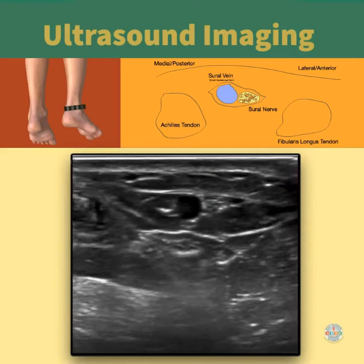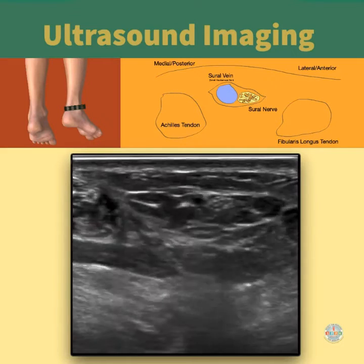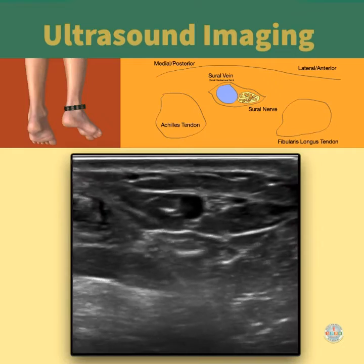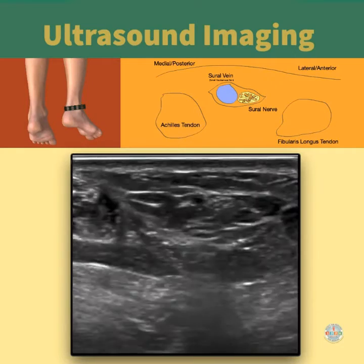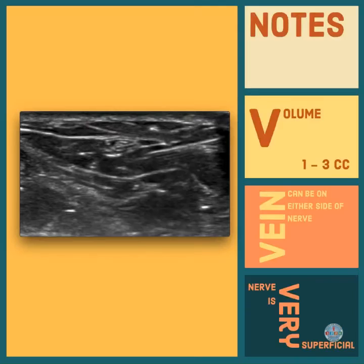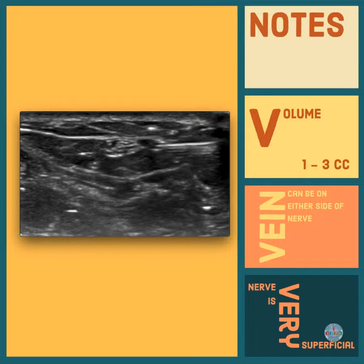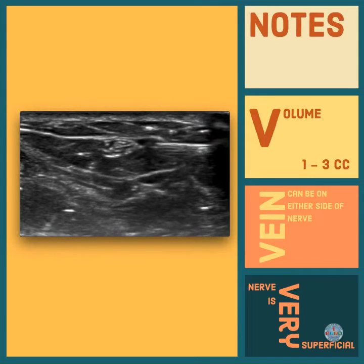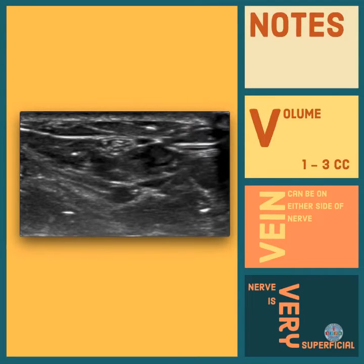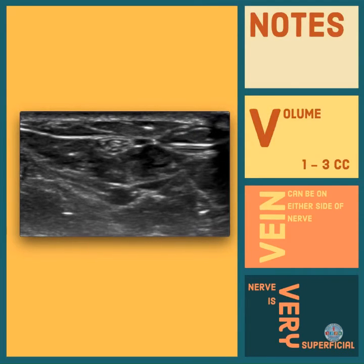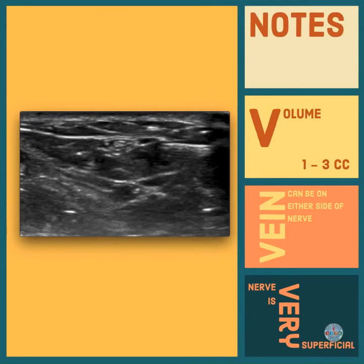Vary your pressure with the ultrasound to identify vascular structures. Note, the volume of local anesthetic is only 1 to 3 cc's. The vein can be on either side of the nerve, and the nerve is very superficial.